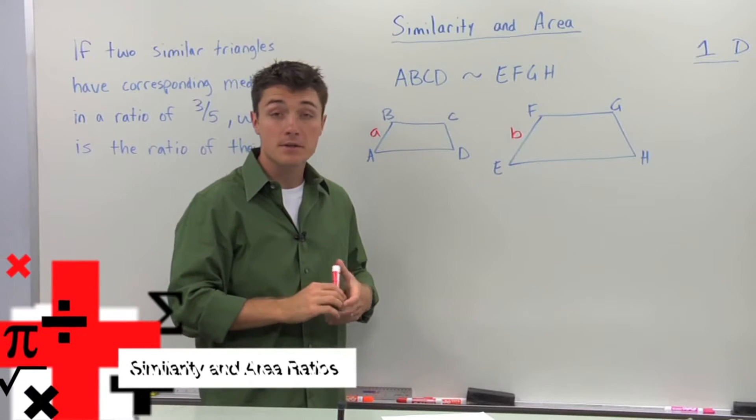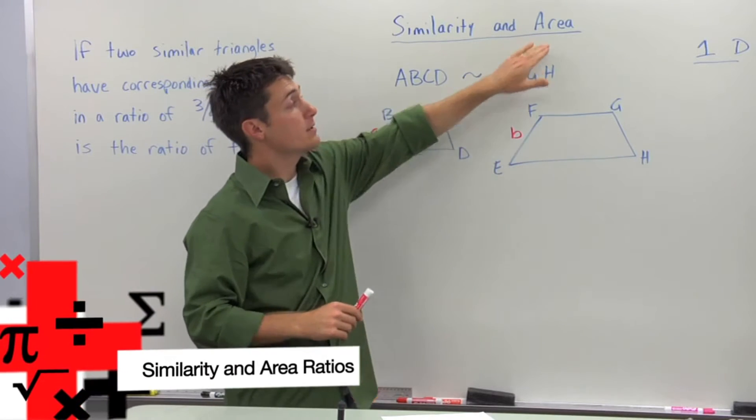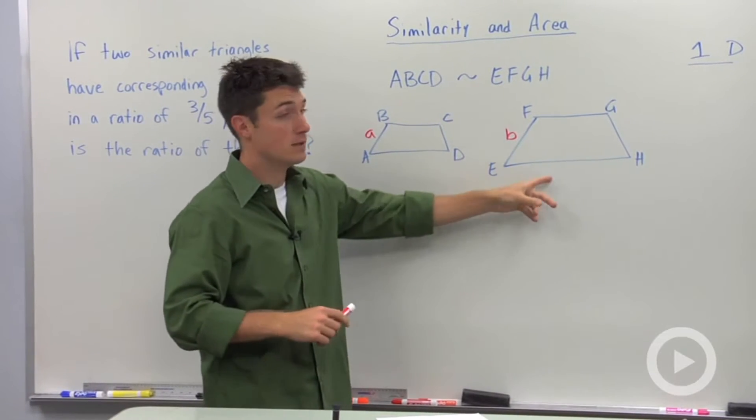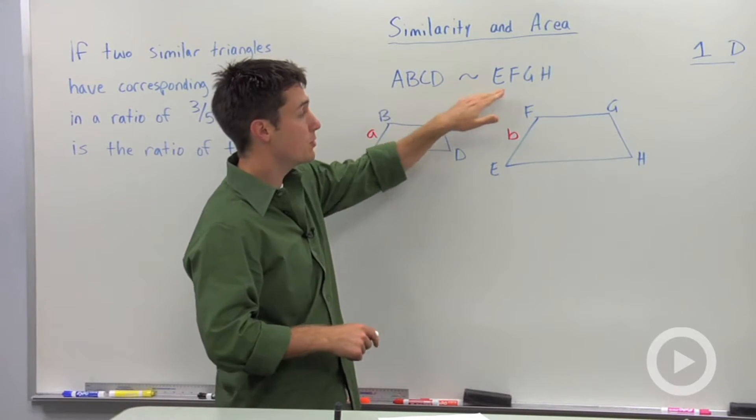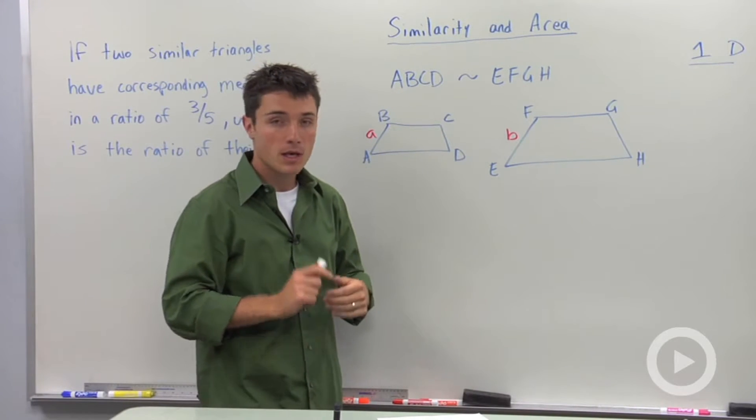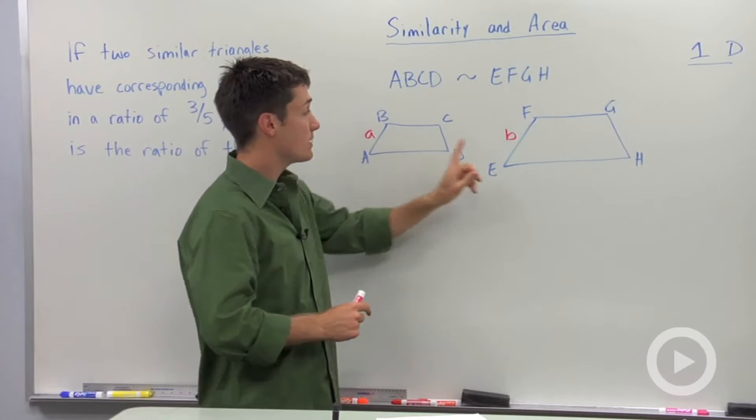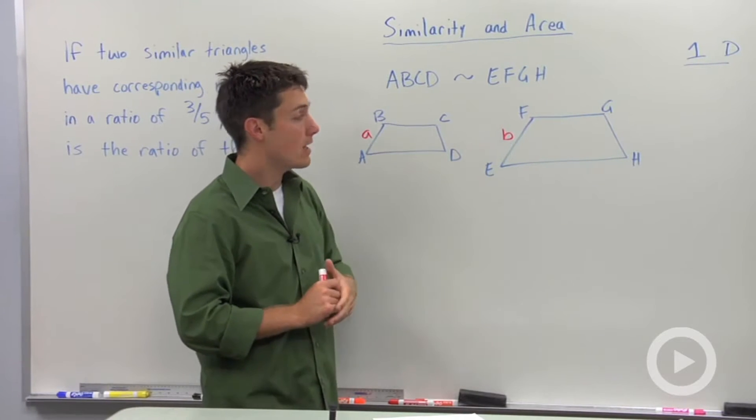We can use this idea of similarity and apply it to area. Let's say we had two polygons that are similar. So here we have ABCD is similar to EFGH. And if I picked one of their corresponding sides, that is AB and EF,